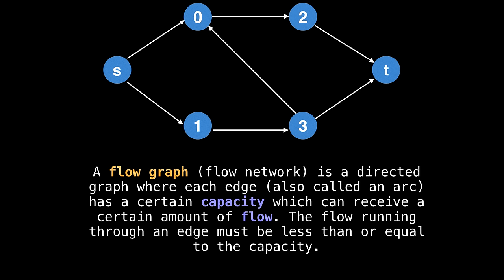Let's dig deeper into how to find the maximum flow. To begin with, you will need a flow graph, which consists of directed edges, which are also called arcs, each directed edge has a certain capacity which can receive a certain amount of flow. At all times, the flow running through an edge must be less than or equal to the capacity. This intuitively makes sense because if we allow more flow than what the capacity permits, it means something has to go wrong. When an edge becomes overcapacitated in some manner, it means that we've pushed the system past its limit.